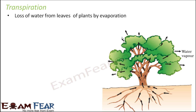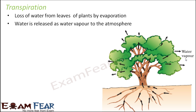The leaves of the plant are exposed to the warm surrounding air, so whatever water is present starts evaporating — liquid water gets converted into water vapor. This process is called transpiration. The leaves contain very tiny pores called stomata through which water is released as water vapor into the atmosphere.